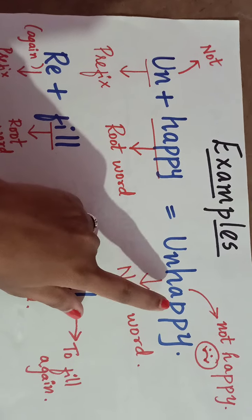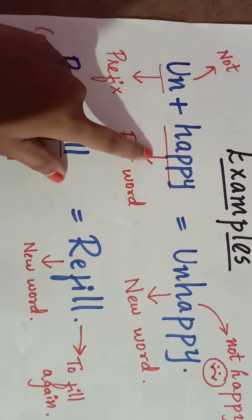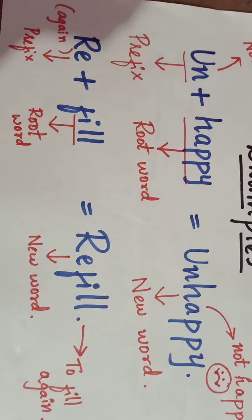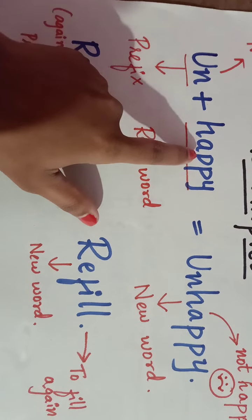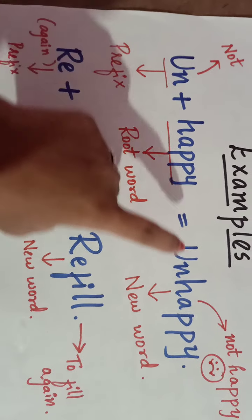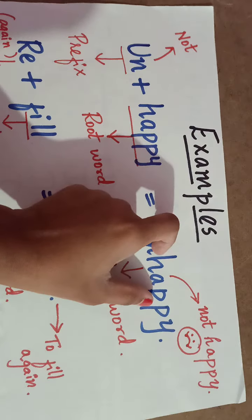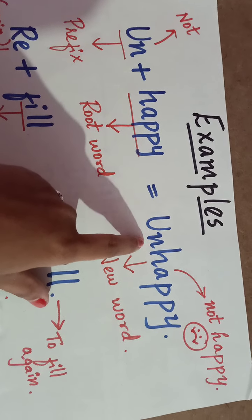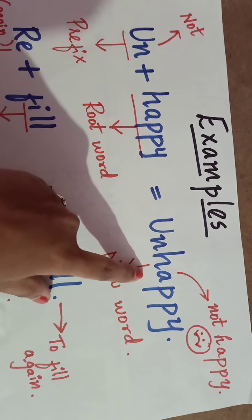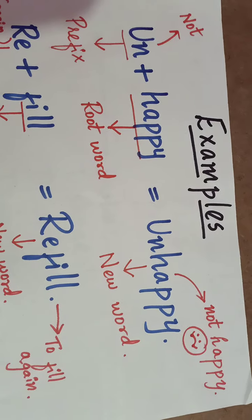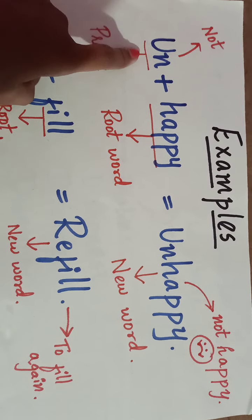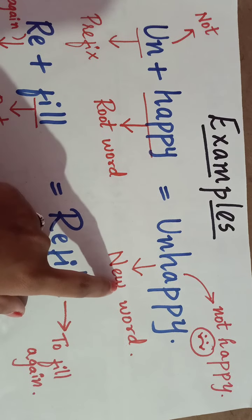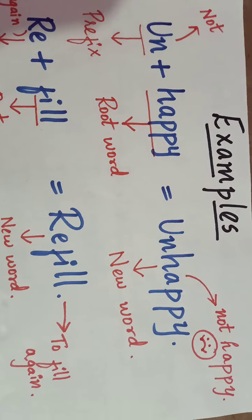Before adding the prefix, the root word was 'happy' — happy means full of smiles. When you add the prefix 'un', the word becomes 'unhappy'. After adding a prefix to a root word, it changes its meaning and becomes a new word.